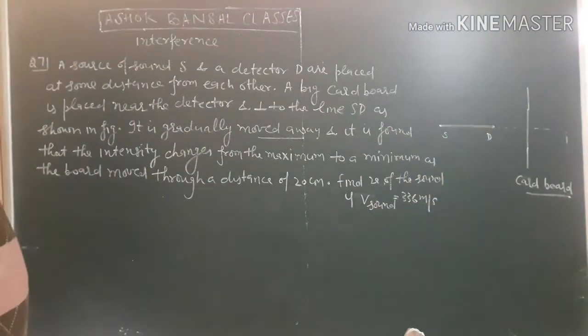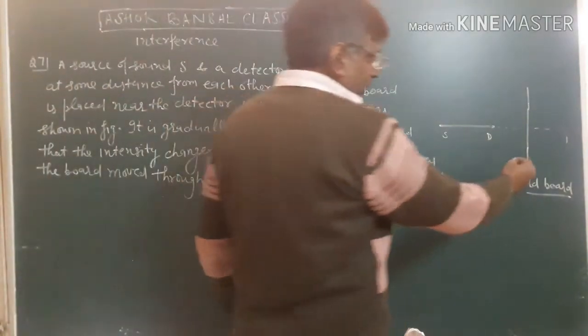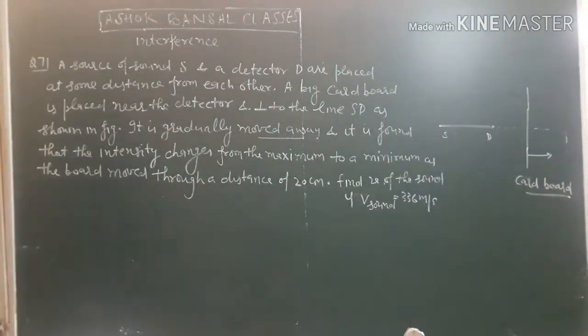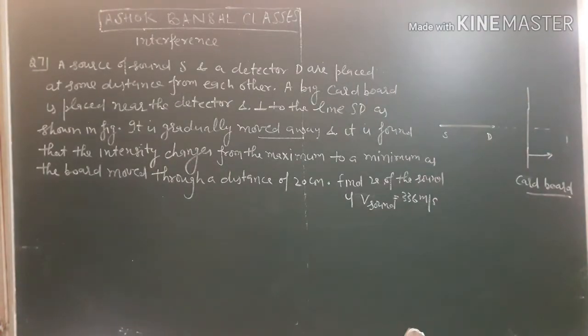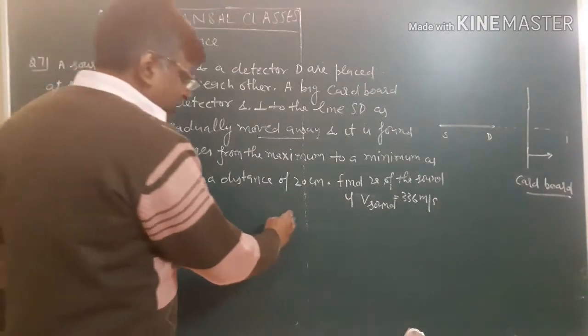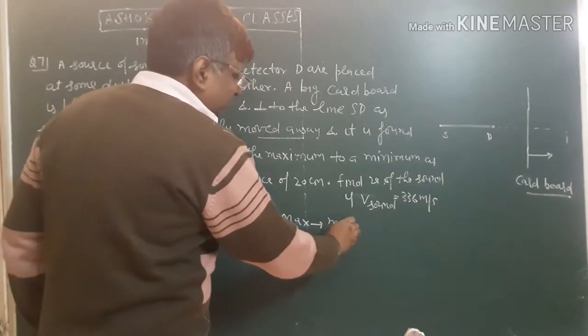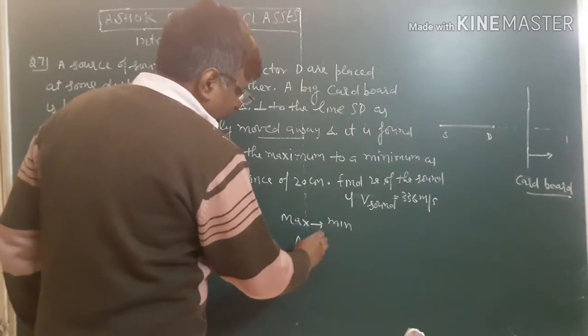It is gradually moved away. It is found that the intensity changes from maximum to minimum. How much is the path difference? The path difference is lambda by 2.